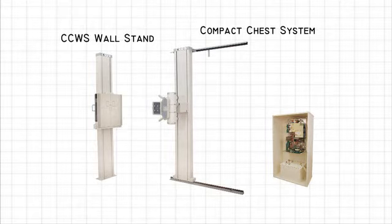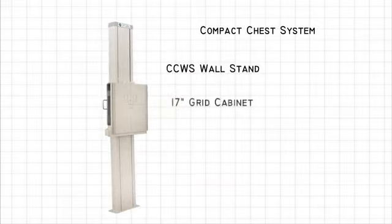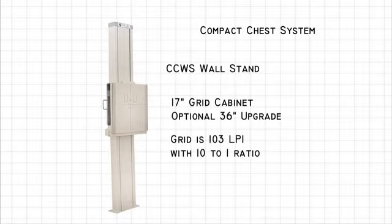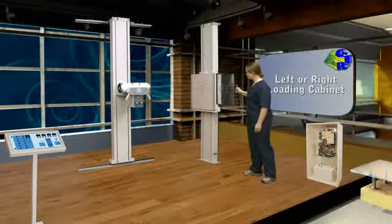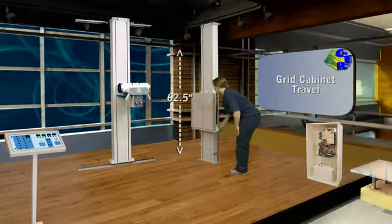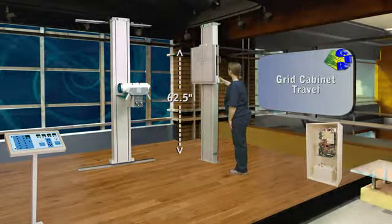The CCWS wall stand comes with a 17-inch grid cabinet with an optional 36-inch upgrade. The grid is 103 LPI with a 10 to 1 ratio. Available in a left- or right-hand loading system, the grid cabinet travels 62.5 inches along the column, covering a wide range of x-ray images.